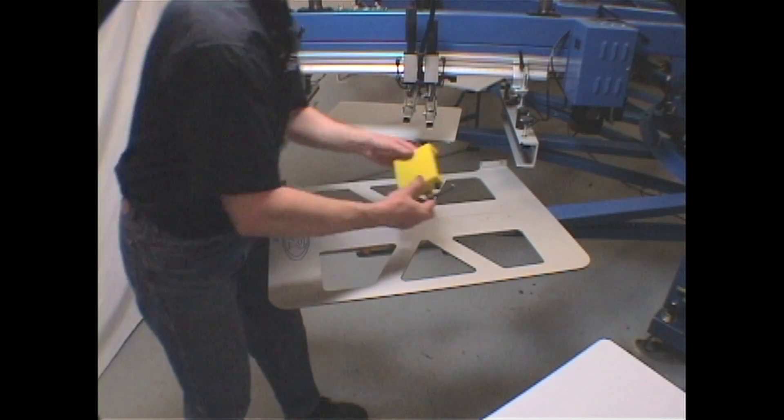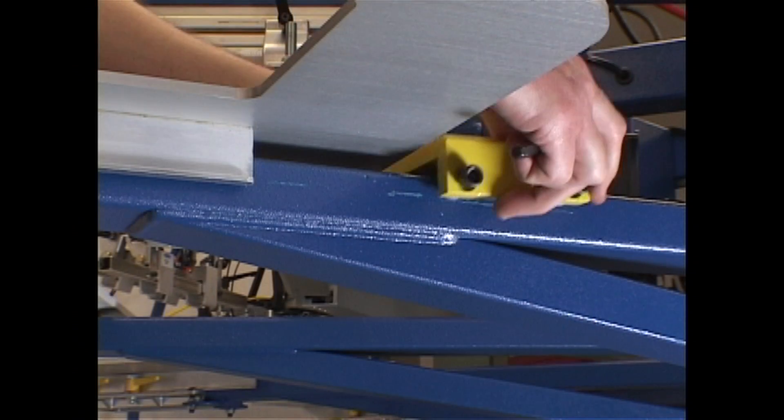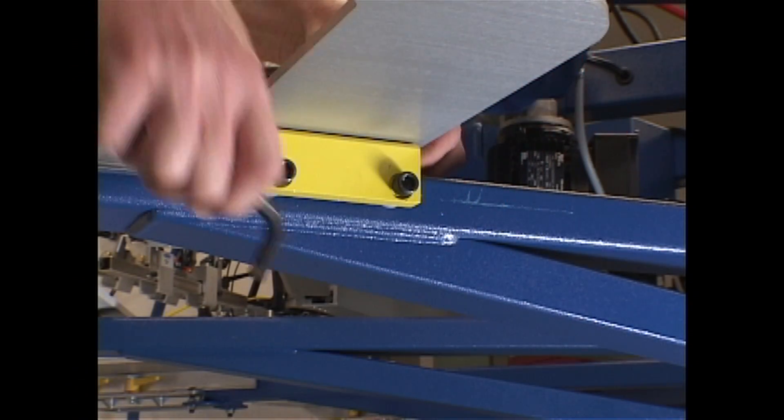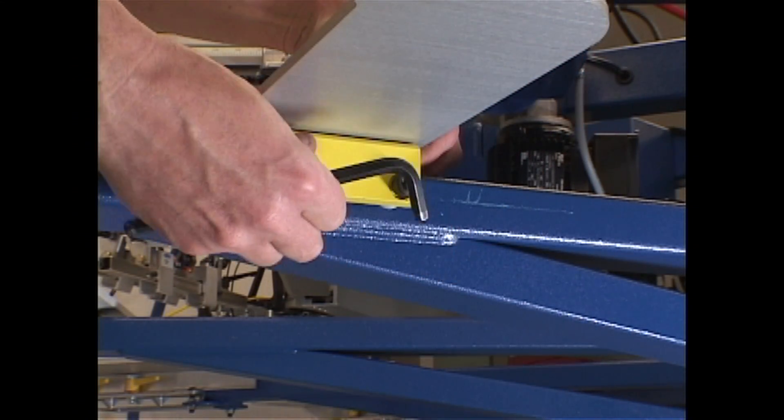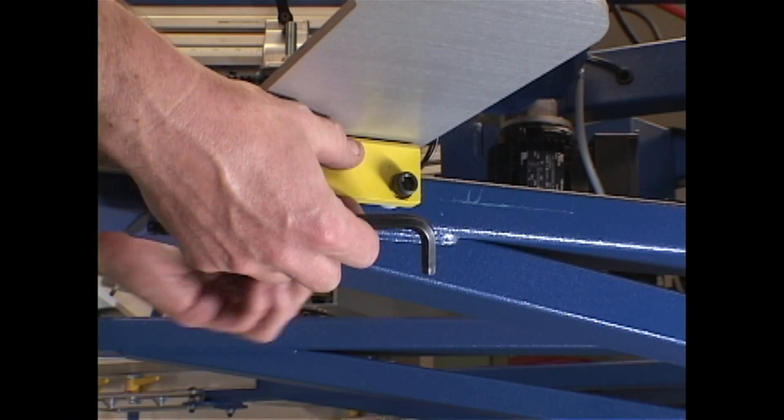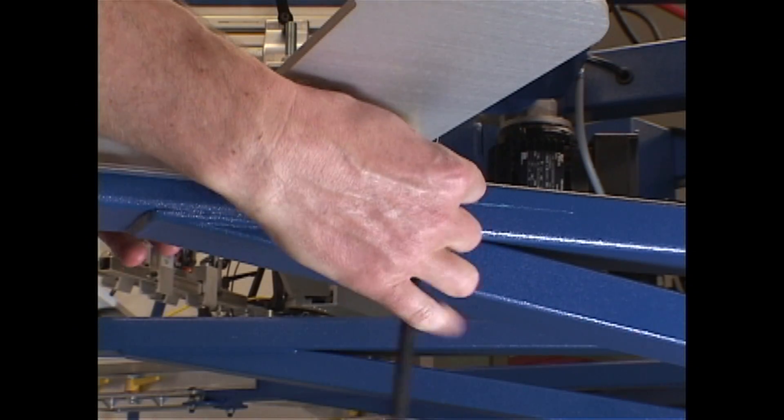Loosen all four bolts on the yellow Tri-Lock pallet stop block and position it behind the pallet on the pallet support arm. Then slide it forward to contact the Tri-Lock pallet. Tighten all four bolts.